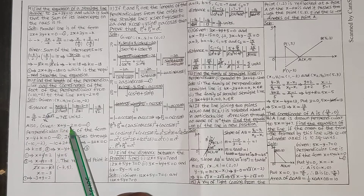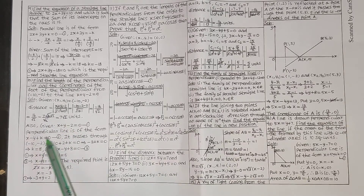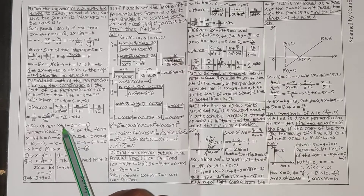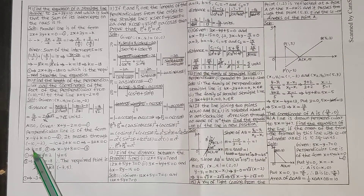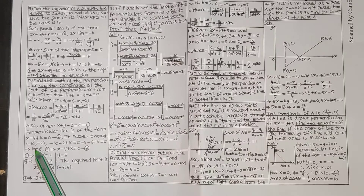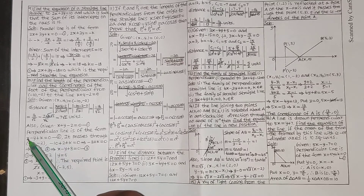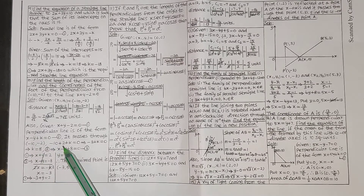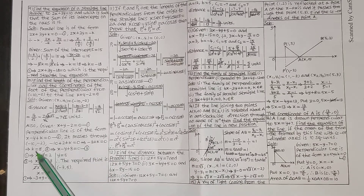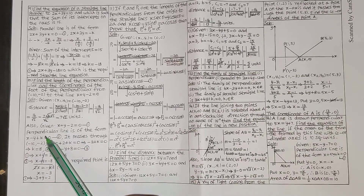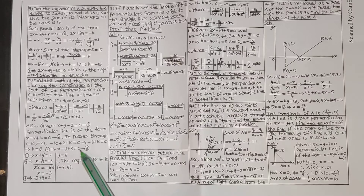The perpendicular from the point has the form x minus y plus k equals 0, where only the sign of the coefficient changes. Since it passes through minus 10 comma minus 2: substituting gives minus 10 minus minus 2 plus k equals 0, so minus 10 plus 2 plus k equals 0, minus 8 plus k equals 0, therefore k equals 8. So the perpendicular line is x minus y plus 8 equals 0.